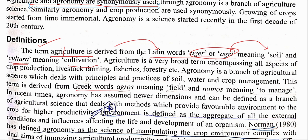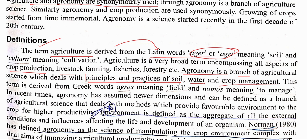Agriculture is a broad term comprising all aspects of crop production, livestock, farming, fisheries, and forestry. Agronomy, on the other hand, is a specific and narrow concept. Agronomy is a branch of agriculture which deals with the principles and practices of soil, water, and crop management. You need to remember this: principles and practices of soil, water, and crop management.